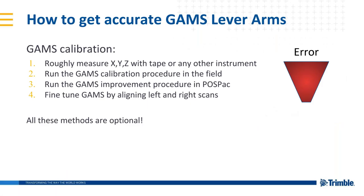We have four different methods to calibrate GAMS. The first method leaves the most error, and as we go from one to four, we get more precise alignment. In most cases we cannot do all four, so they are optional — we might do one and two, or one and three. You should not skip ahead to number four and then go back to number one, because that will give you more error. You should do them in order, but you don't need to do all of them.